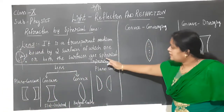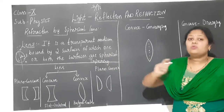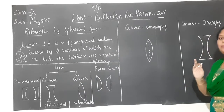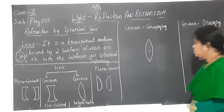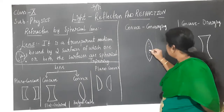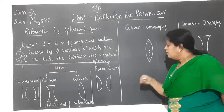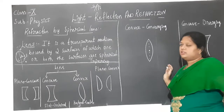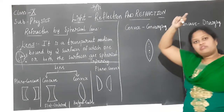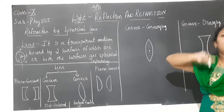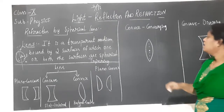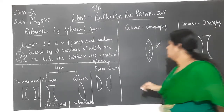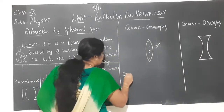These two lenses also form part of a sphere, which is why the word 'spherical' is used. The centre of the mirror was called the pole, but here, for a lens, it is represented by the letter O and called the optic centre.